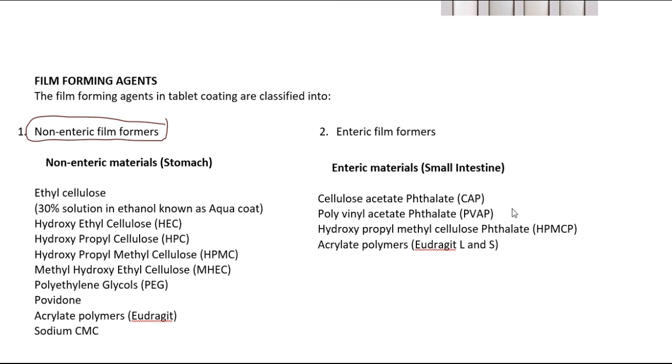Examples of non-enteric materials are ethyl cellulose, hydroxyethyl cellulose, hydroxypropyl cellulose, hydroxypropyl methyl cellulose, methyl hydroxyethyl cellulose, polyethylene glycols, acrylate polymers, and sodium CMC. These are non-enteric film former examples.